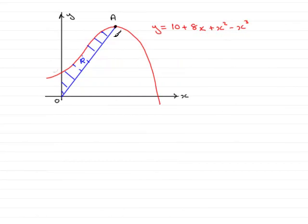Now in this next part we're asked to find this shaded area R, the area that is cut off by the line joining O to A and the curve and the y-axis.